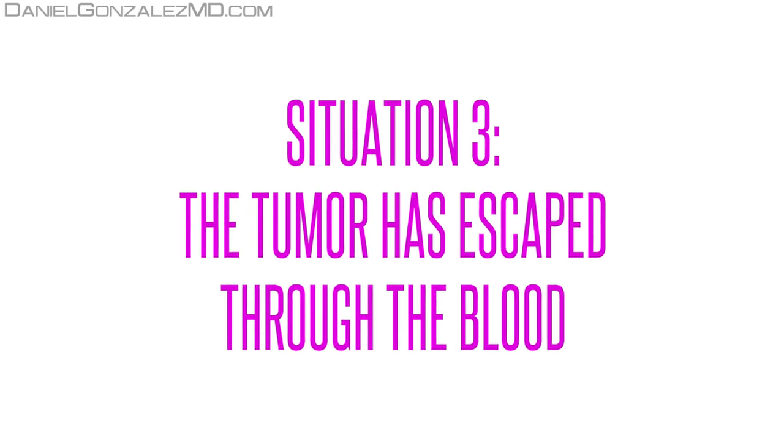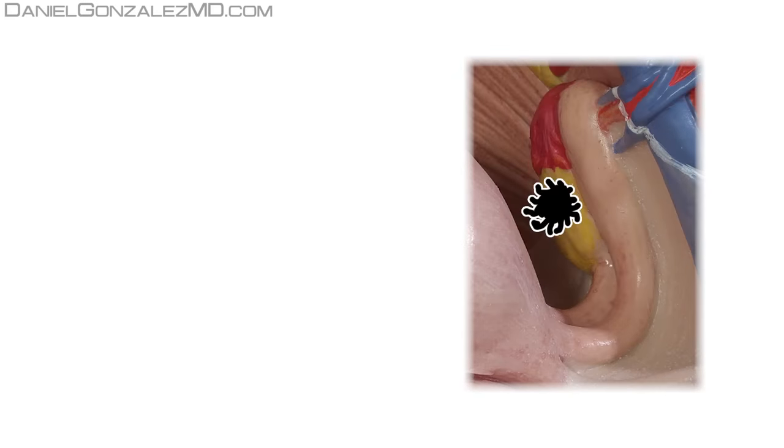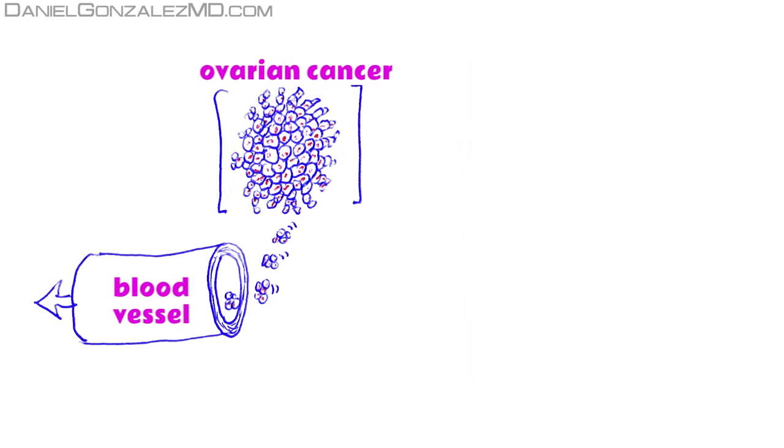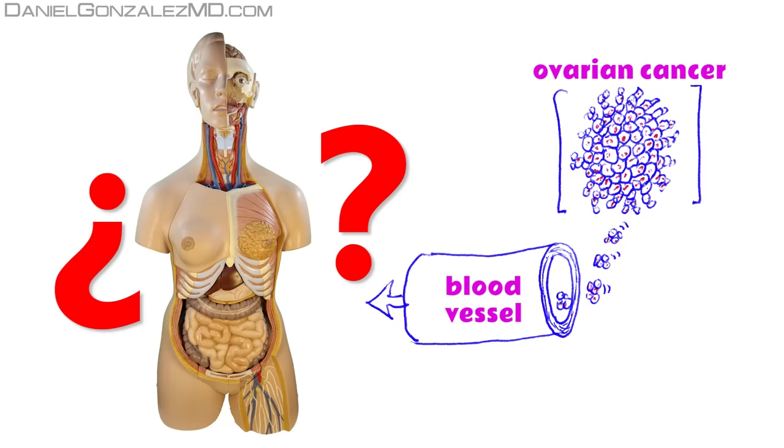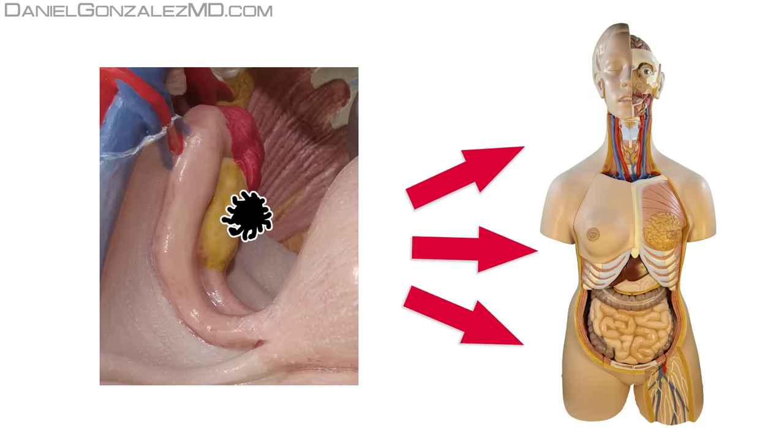Situation 3. The tumor has escaped through the blood. When cancer breaks a blood vessel near the tumor and access blood, tumor cells travel throughout the body. In places where, due to their special conditions, they like to stay and live, these cells leave the blood vessel and settle, growing and multiplying.